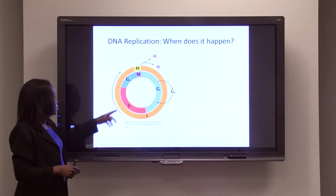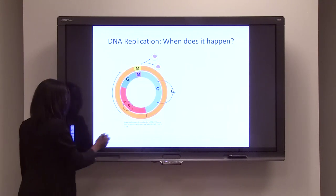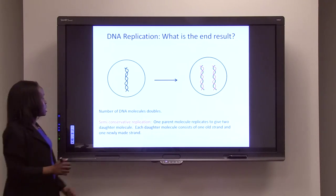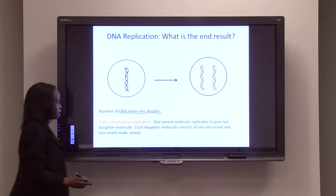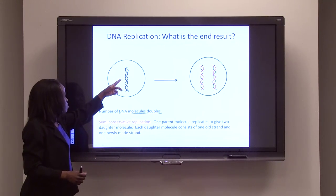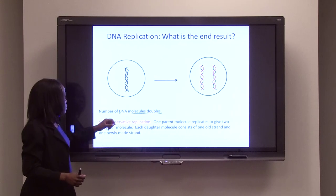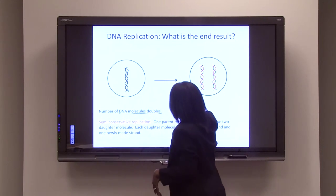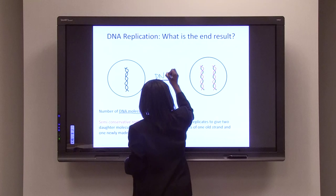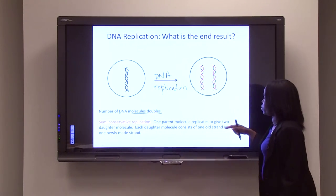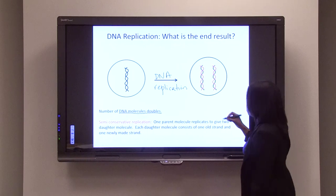So we already spoke about when DNA replication happens. It happens in the S phase. Now what happens as a result of replication? Basically, the number of DNA molecules will duplicate. So this is just a crude representation of one fragment of DNA molecule in a cell. So this is actually showing the DNA in the nucleus. And then after replication, so this is after the process of DNA replication, you end up with two molecules and they're called daughter DNA molecules.